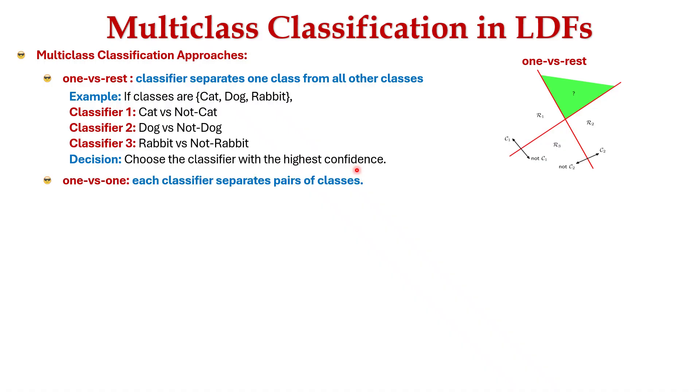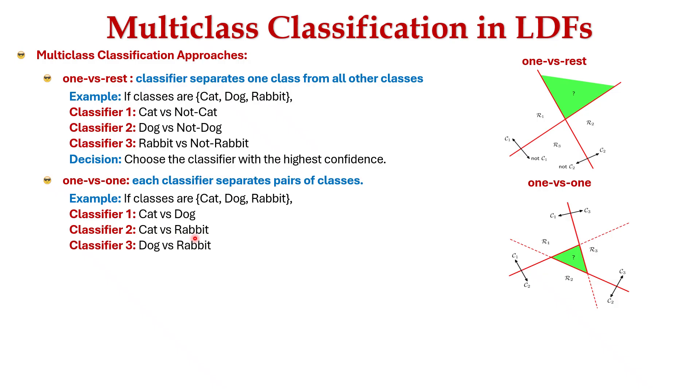The next approach is one versus one. Here each classifier separates a pair of classes as shown in this diagram. For example with three classes—cat, dog, and rabbit—the first classifier represents cat versus dog, the second is cat versus rabbit, and the third is dog versus rabbit. The decision is based on majority voting among the classifiers.